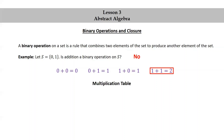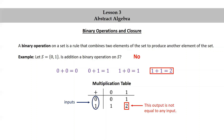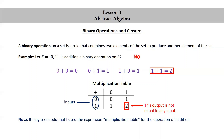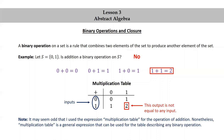Let's look at the multiplication table for this example. We see the problem: the inputs are 0 and 1, but there's an output of 2 which is not equal to either of those inputs. Note, it may seem odd to use the expression 'multiplication table' for the operation of addition. Nonetheless, 'multiplication table' is a general expression that can be used for the table describing any binary operation. It would also be acceptable to call this an addition table instead.